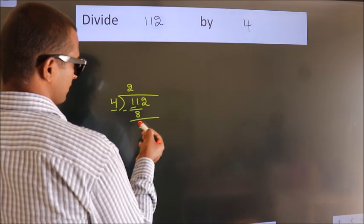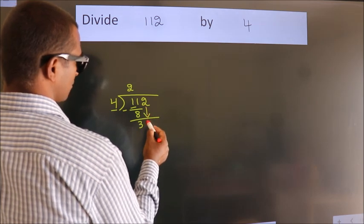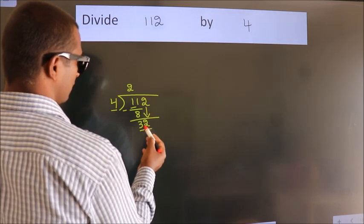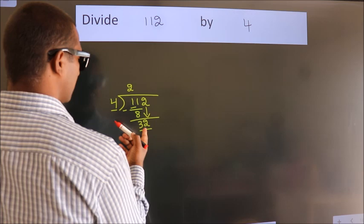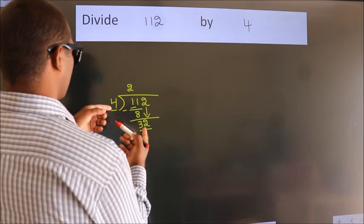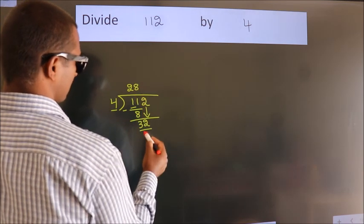After this, bring down the beside number. So 2 down. So 32. When do we get 32? In the 4 table. 4 8's, 32.